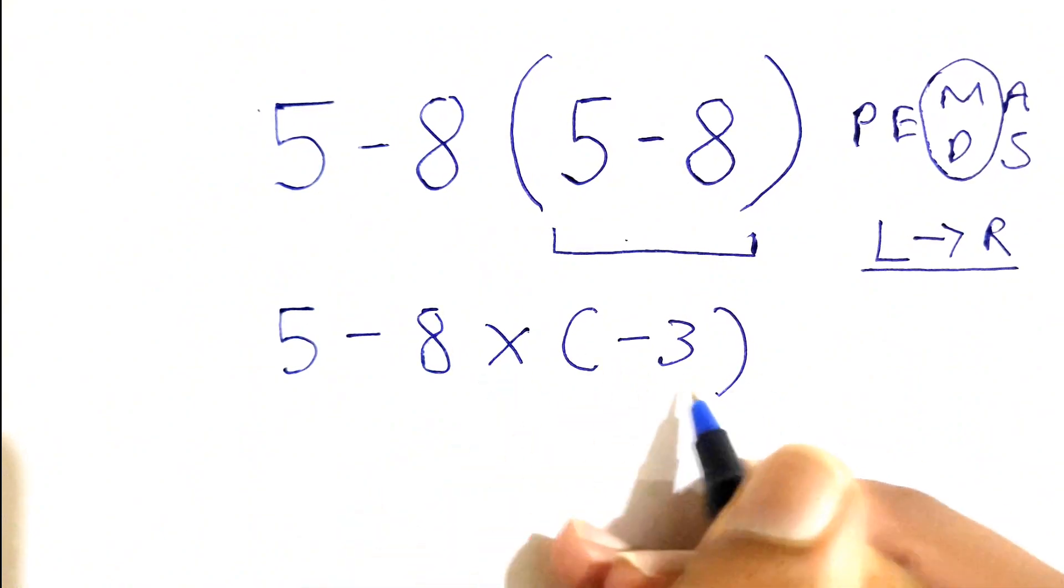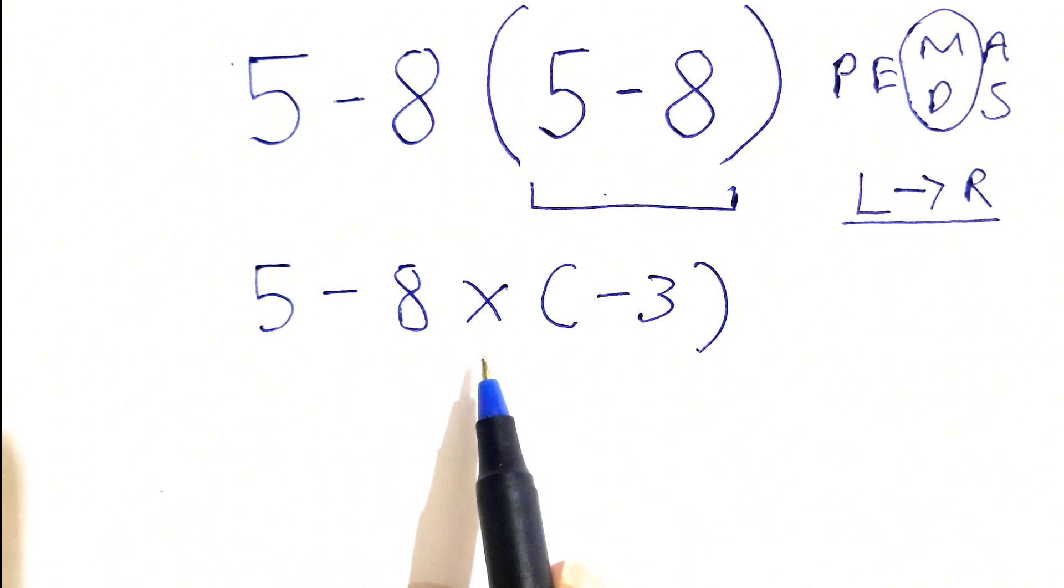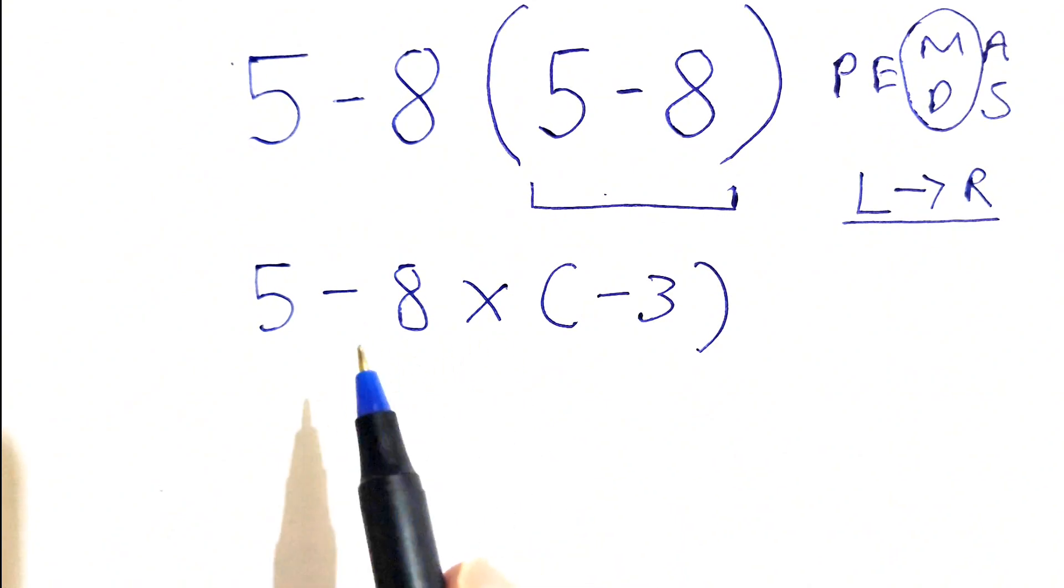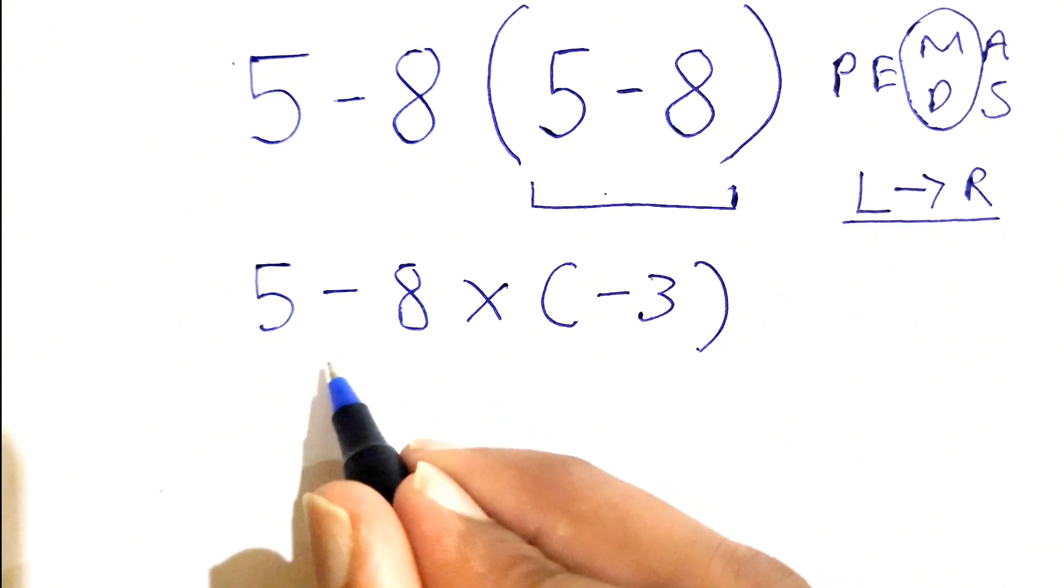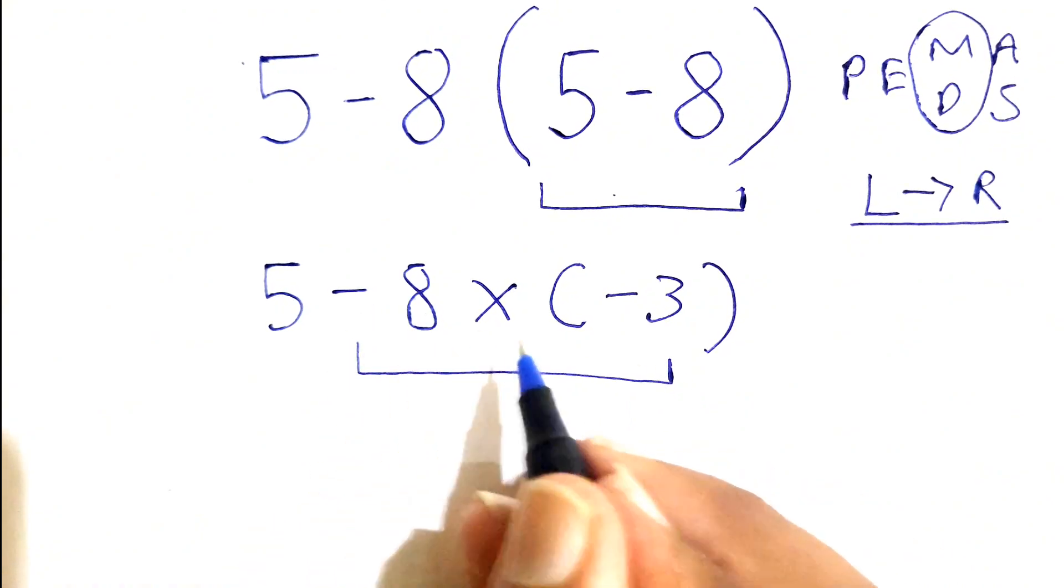Now, as we can see, we have subtraction and multiplication. The priority of multiplication is greater than subtraction, so we'll solve negative 8 times negative 3, which gives the answer as positive 24.